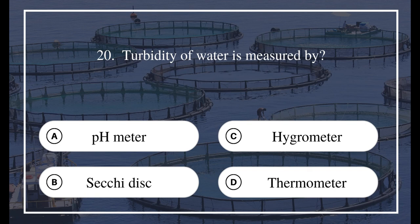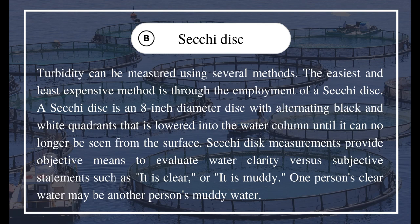Question 20: Turbidity of water is measured by A) pH meter, B) secchi disc, C) hygrometer, D) thermometer. The answer is B) secchi disc. Turbidity can be measured using several methods; the easiest and least expensive is through the use of a secchi disc. A secchi disc is an eight-inch diameter disc with alternating black and white quadrants that is lowered into the water column until it can no longer be seen from the surface. Secchi disc measurements provide an objective means to evaluate water clarity versus subjective statements such as 'it is clear' or 'it is muddy.'